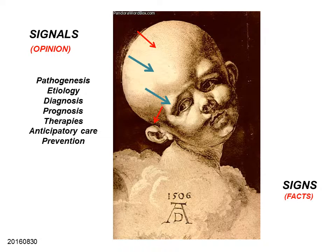The importance of having a complete array of signs in order to formulate opinions about their value as signals cannot be overstated. Had we used only the signs marked red, our perspectives of pathogenesis, etiology, and therefore diagnosis would have been completely different than if we include the additional signs marked blue. The ability to note is fundamental for the process of diagnosis, formulation of therapies, anticipatory care, and prevention strategies.